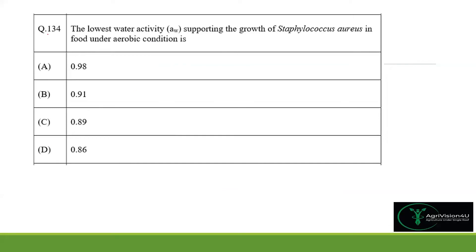Coming to question 134: the lowest water activity supporting the growth of Staphylococcus aureus in food under aerobic conditions. For most bacteria, the optimal water activity is greater than 0.9. However, in the case of Staphylococcus aureus it is approximately 0.83 to 0.85.